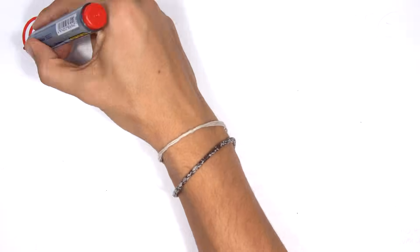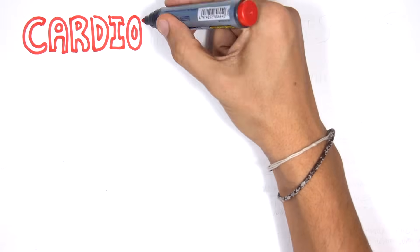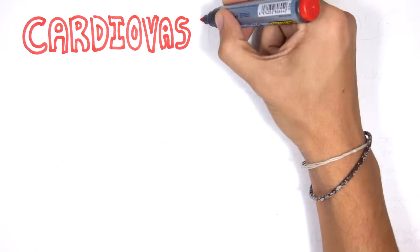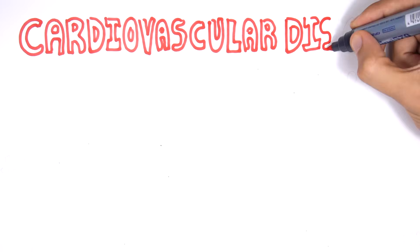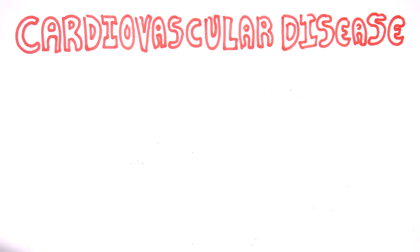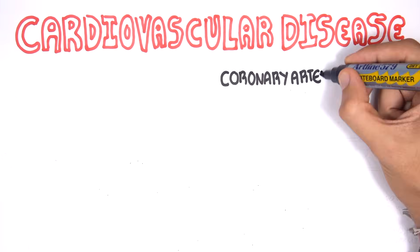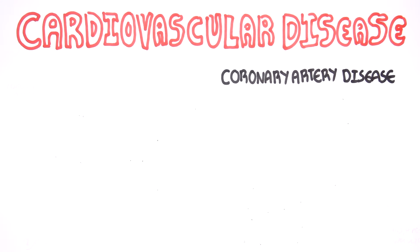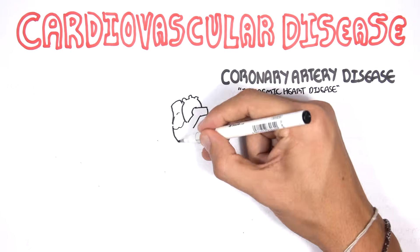In this video we will look at cardiovascular diseases and we'll break them down into categories. The first and most common is coronary artery disease, also known as ischemic heart disease.